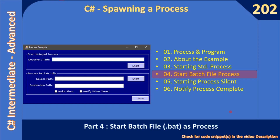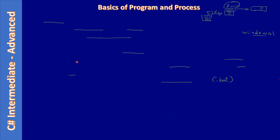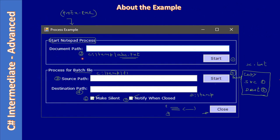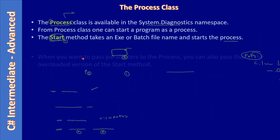Hello friends, welcome to the C# intermediate to advanced tutorial. You are watching part 4 of the sub-series spanning a process from a C# application. In this part, we will start a batch file as a process. We will cover using the batch file to perform a file copy operation from one location to another, specifying the source path and the destination path. The copy will occur from source to destination when the user clicks the Start button.